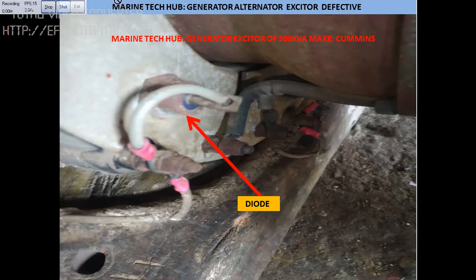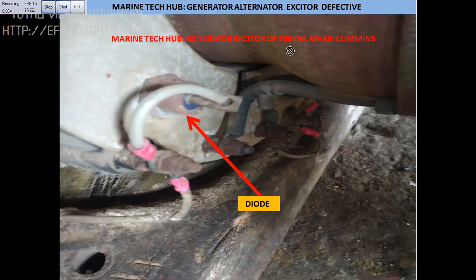Welcome to Marine Tech Hub. Today I want to explain about a generator alternator where the exciter coil got burnt. In this case it was a Cummins 500 KVA engine, and here you can see the exciter.